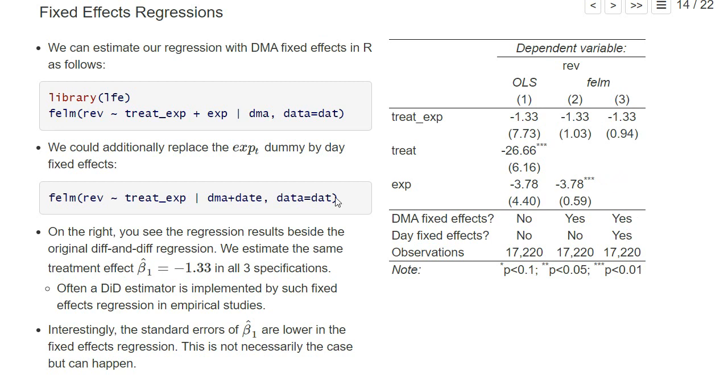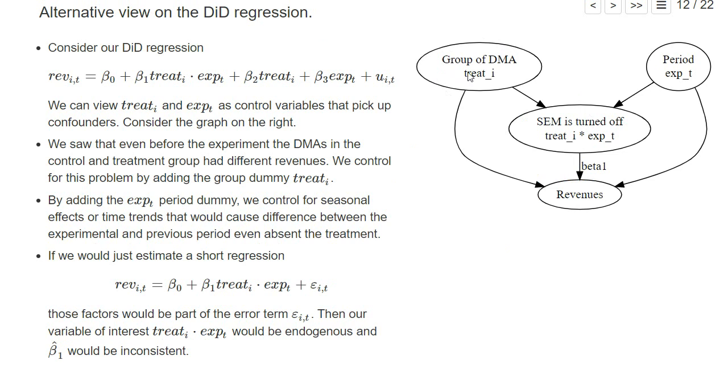That's what we did in the last regression here. I don't add explicitly this dummy variable for experimental or pre-experimental period, but I add day fixed effects. Again, our estimated coefficient for the treatment effect does not change—it's again minus 1.33.